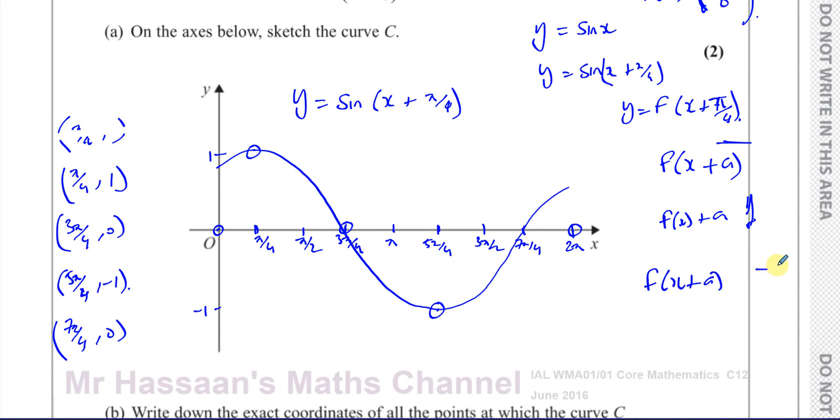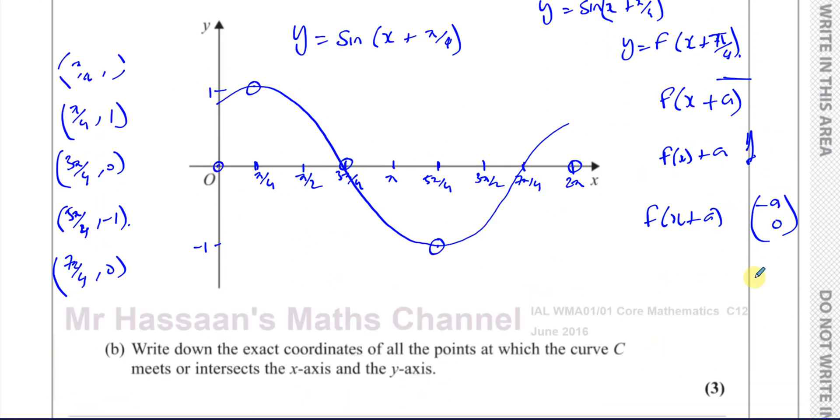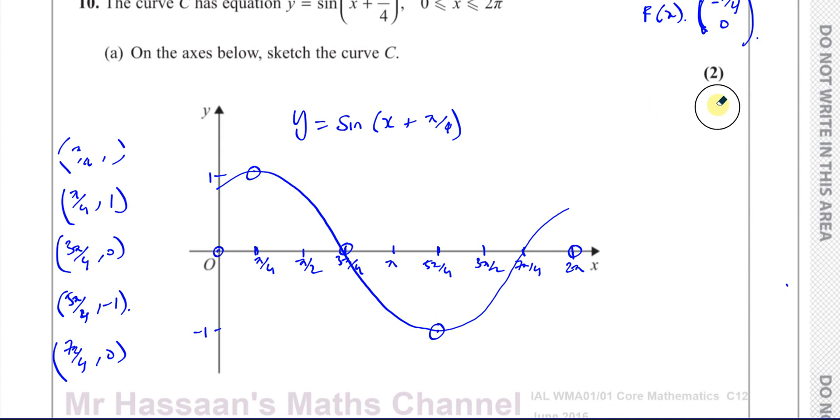All the x coordinates are translated pi over 4 units to the left. If it's f of x plus something, it's going to be minus that something, 0. That's going to be the translation. If it's f of x minus something, it's going to be that thing positive and 0. It's the opposite of that sign. It's inside the function, it does the opposite. So there is the answer to this question. That's the graph of y equals sine of x plus pi over 4.